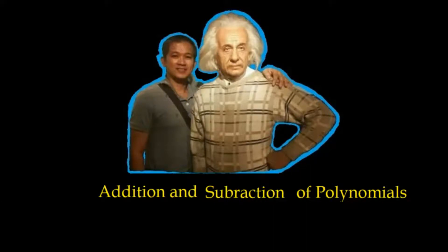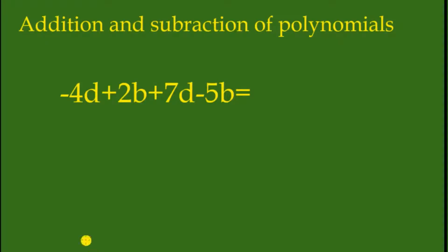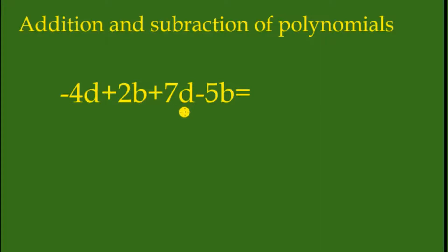Hello kids, today we will study addition and subtraction of polynomials. In this example we have negative 4d, positive 2b, positive 7d, negative 5b. We will gather like terms — this is d and this is d, so we will combine these two terms.